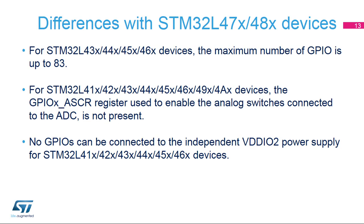This slide presents the key differences between baseline STM32L47x/48x devices and other devices. Compared to STM32L47x/48x devices, STM32L4x4, L4x5, and L4x6 devices have up to 83 GPIOs, and STM32L41x and L42x devices have up to 52 GPIOs. They no longer have GPIOs connected to an independent power supply VDD-IO2, and the GPIOX ASCR register enabling an analog switch connected to the ADC inputs is no longer present.